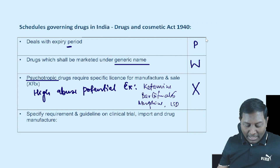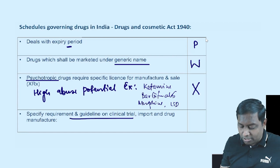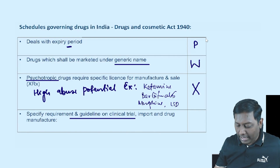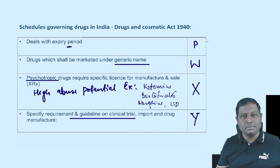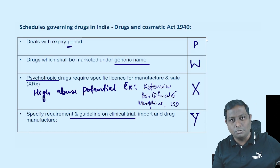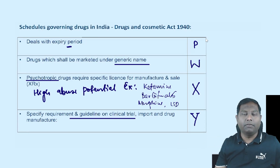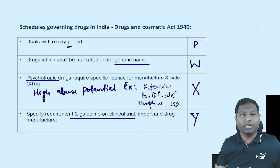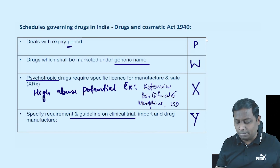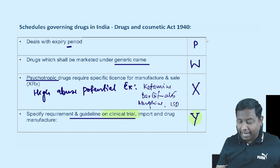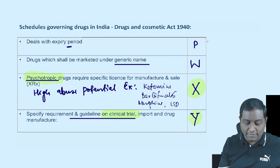Examples of psychotropic drugs under Schedule X include ketamine, barbiturates, morphine, and LSD. Schedule Y specifies requirements and guidelines for running a clinical trial. The mnemonic: when asked 'why should I prescribe your drug,' the answer is 'let's do a clinical trial' — 'why' sounds like 'Y' for Schedule Y.